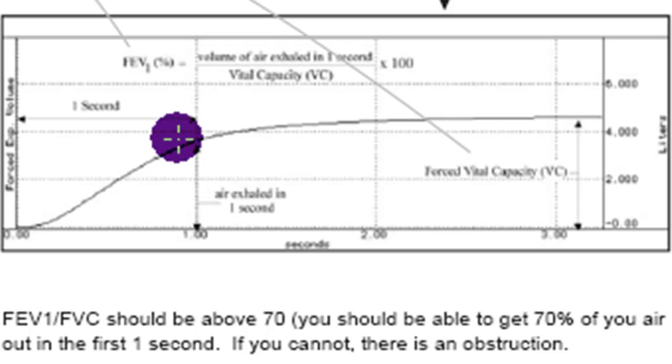Technically, someone with asthma can move as much air or even more than a normal person. They just can't do it as fast. And so the way we would see this on this curve is it would take much longer to get that air out. So someone with asthma, if you listen to them expire, it takes them much longer to get that air out.